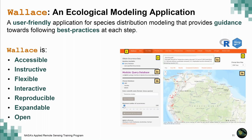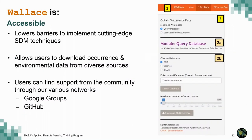Wallace is accessible because it lowers the barrier to implement cutting-edge SDM techniques through a friendly graphic user interface. It also allows users to download occurrence and environmental data from a diversity of sources, and users can find support from the community through various networks, including Google Groups and GitHub.